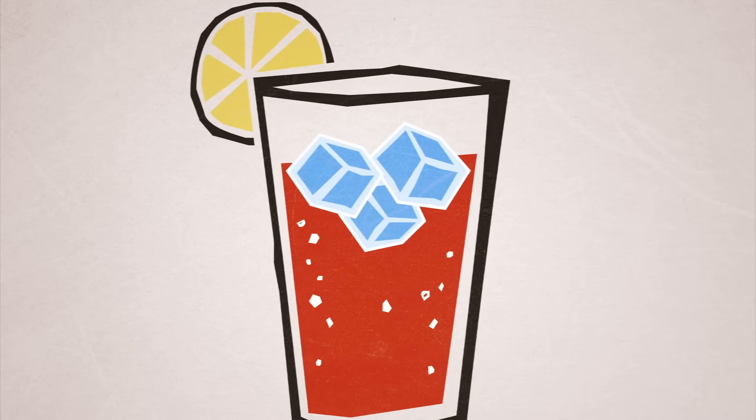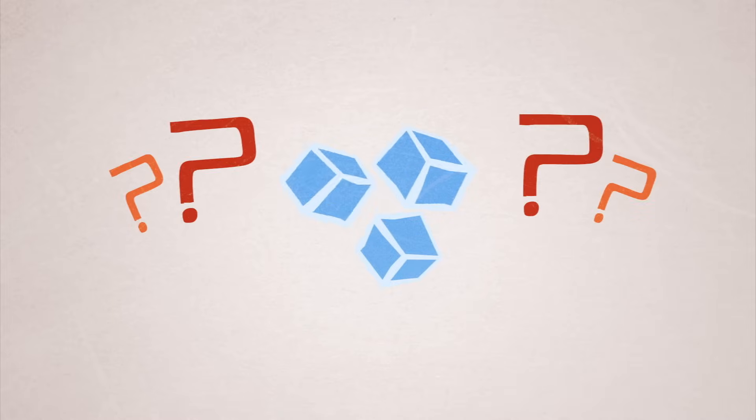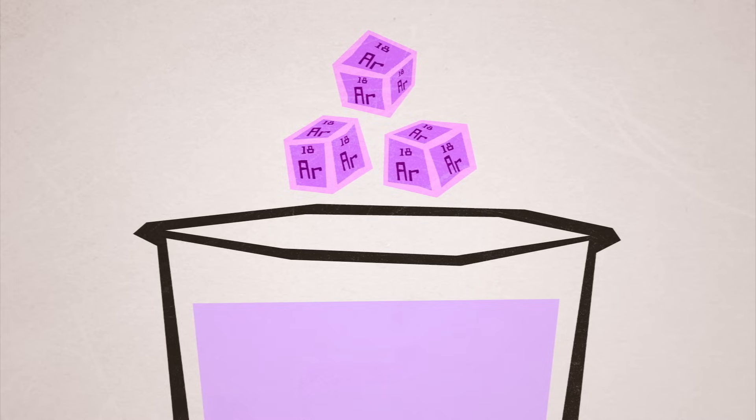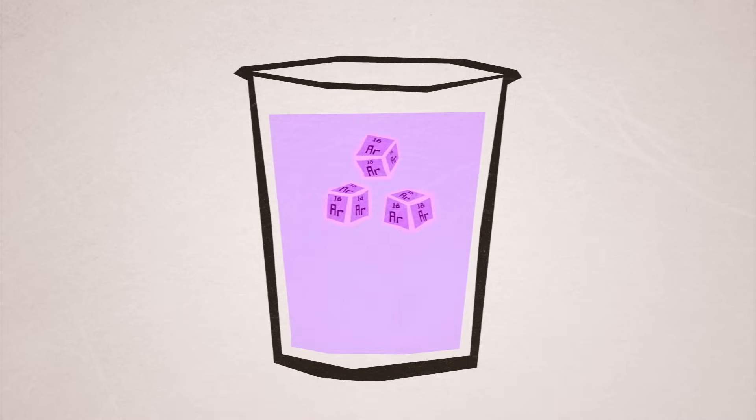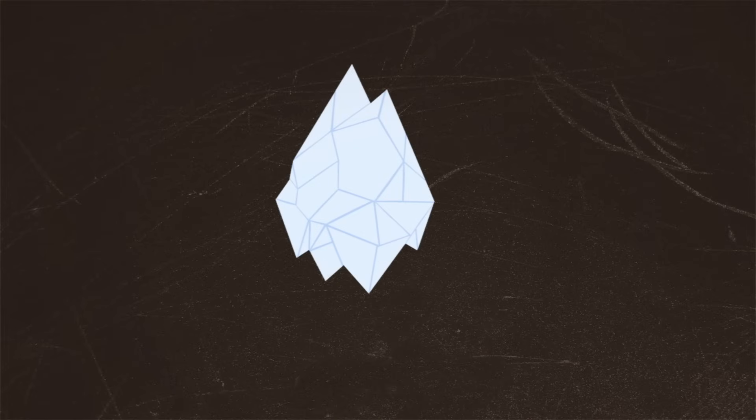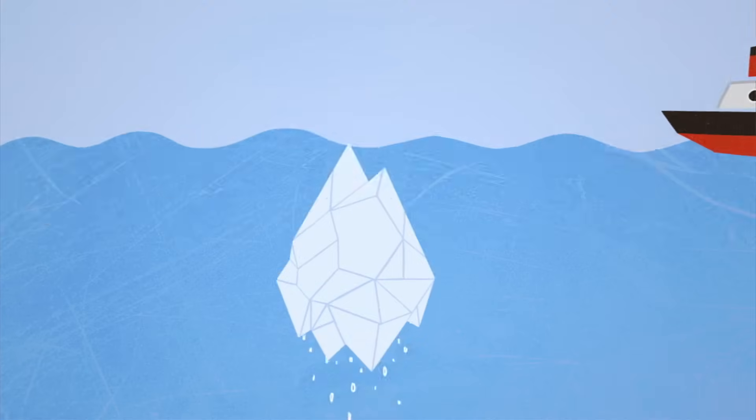Iced tea. Why do these ice cubes float? If these were cubes of solid argon in a cup of liquid argon, they would sink, and the same goes for most other substances. But solid water, a.k.a. ice, is somehow less dense than liquid water. How's that possible?